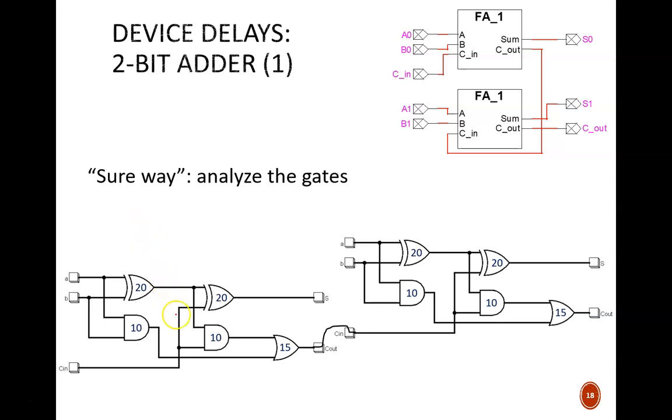Each of these full adder devices contains the same gate layout of two exclusive ORs, two ANDs, and one OR. The carry-out bit of the first adder serves as the carry-in to the next adder, so there is a wire connecting them. The assumed delays through each gate are written on the schematic. Then we work upstream to downstream, adding the largest starting delay to the delay through each gate.